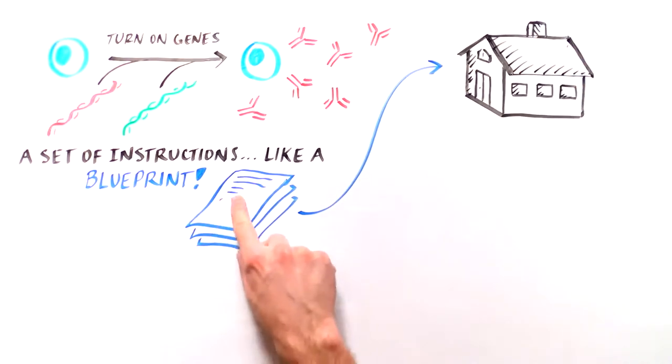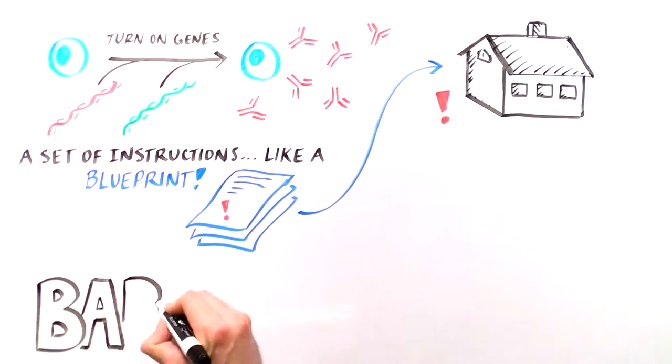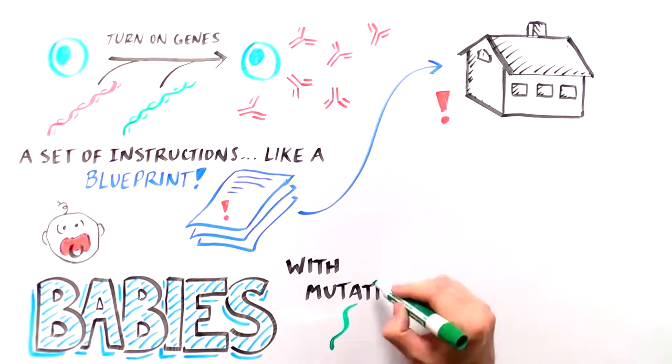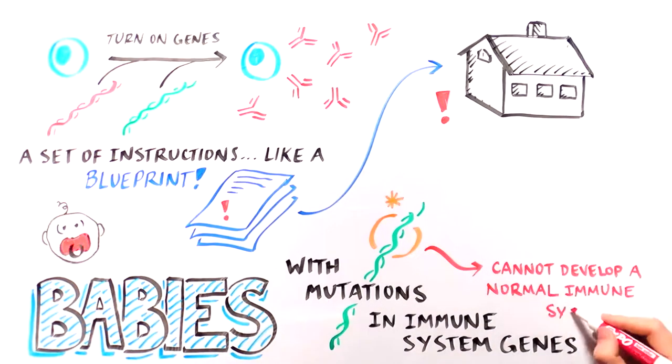If a detail is left out of the blueprint, you may end up with a house without a door. Babies who are born with mutations in important immune system genes lack the correct blueprint, and as a result, they can't develop a normal immune system.